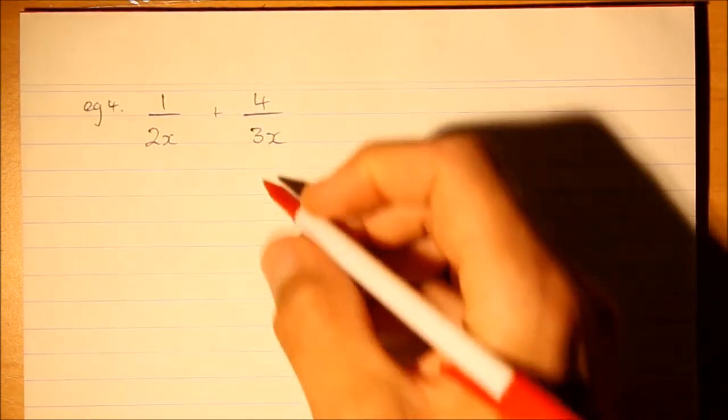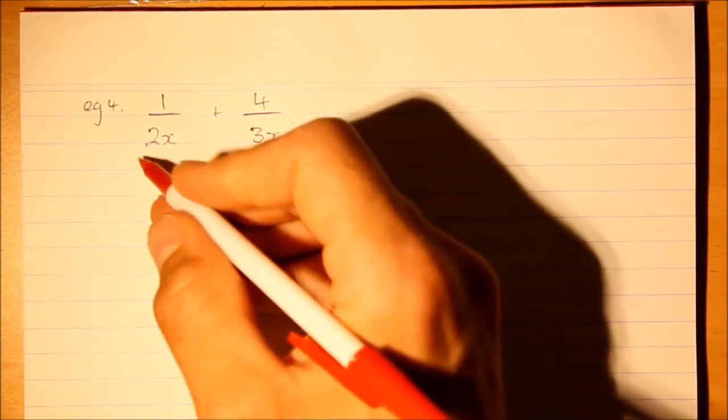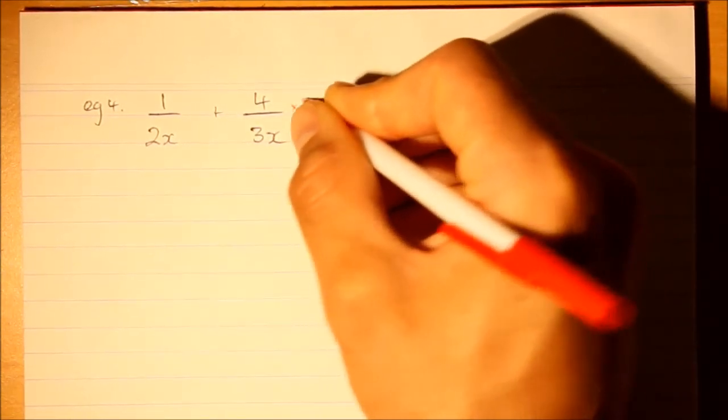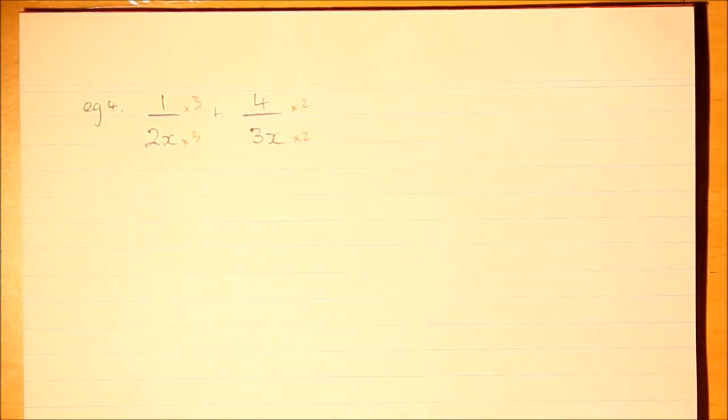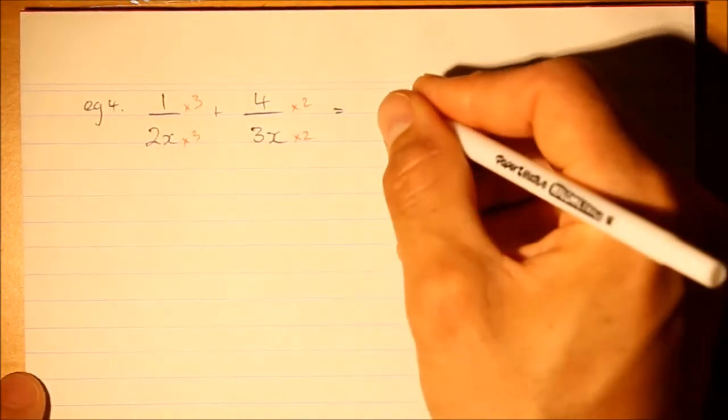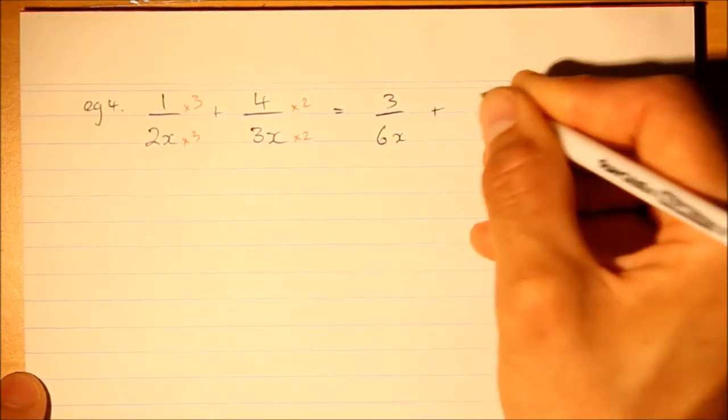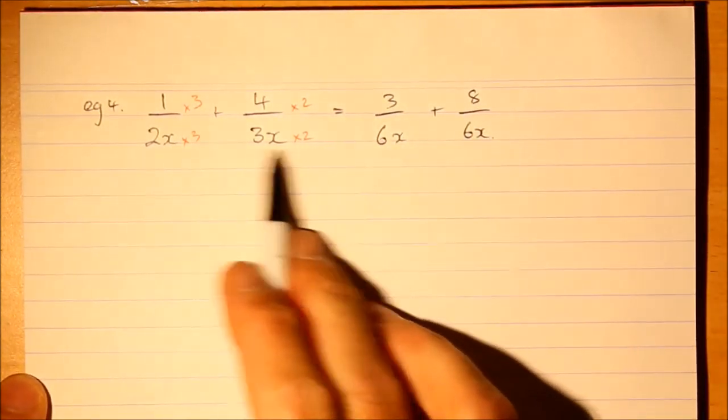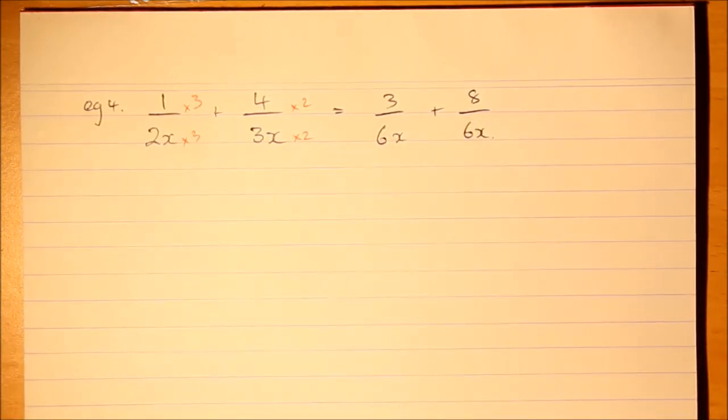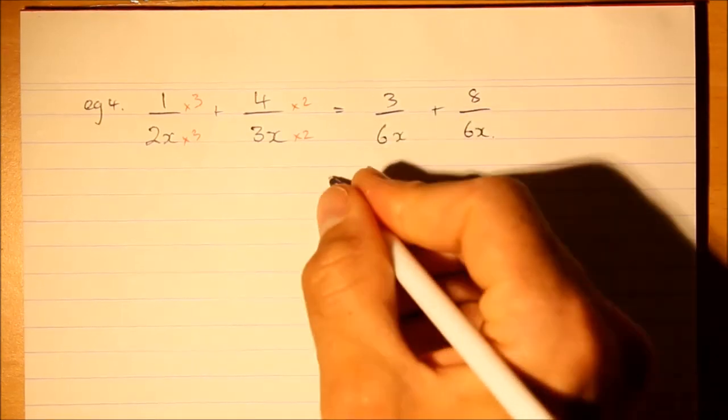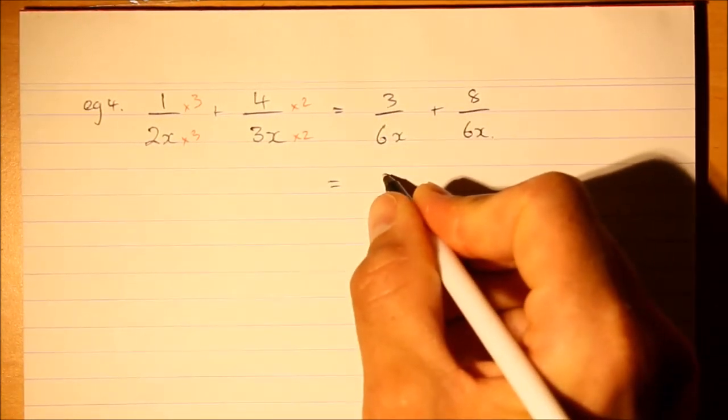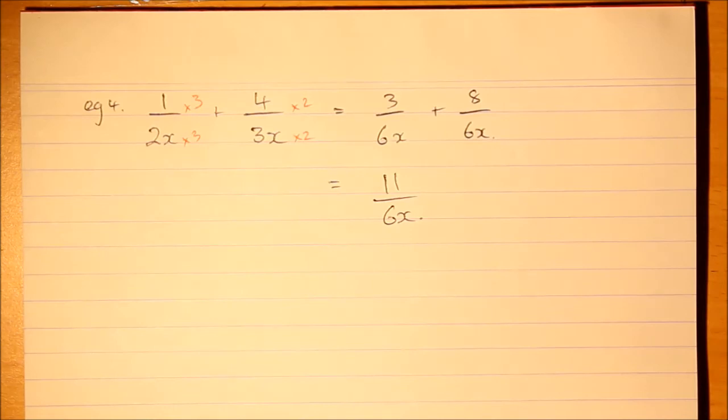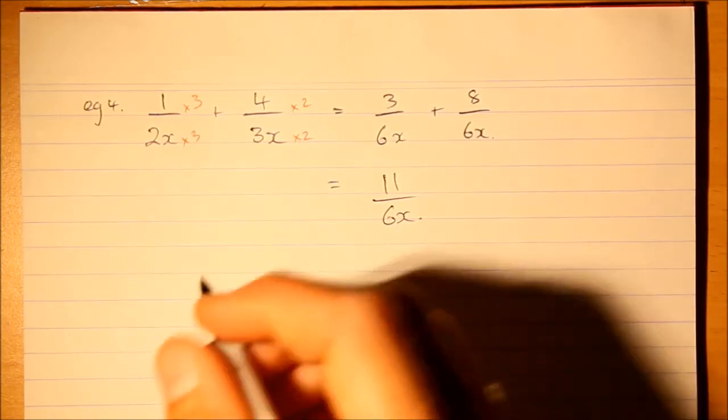Looking at the numbers, common multiples of 3 and 2 would be the 6, the lowest common multiple. If you just multiply by 2 this side and by 3, with that simple manipulation we've made the denominators the same, which is just what we need to do, and now we can add the tops together, numerators, and we have our simplified expression.